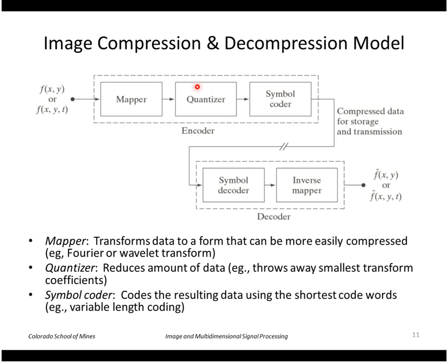Then we take that result, those coefficients, and we pass it through a quantizer. And this is an optional step. What it does is it reduces the amount of data by throwing some of it away, for example the smallest magnitude coefficients. So if we do this we're not going to be able to reconstruct the image exactly because we've lost some information.